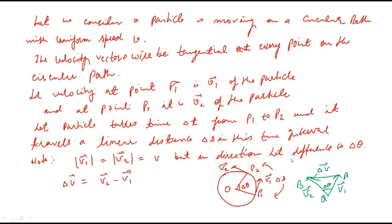But in direction, the difference is delta theta. Now we represent the velocities v1 and v2 by a triangle called the velocity triangle. The side QA represents the velocity vector v1 and the side QB represents the velocity vector v2. It is important to note that the magnitude of vector v1 equals v and the magnitude of vector v2 is also equal to v.